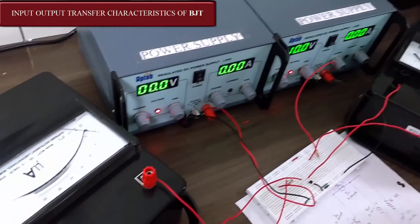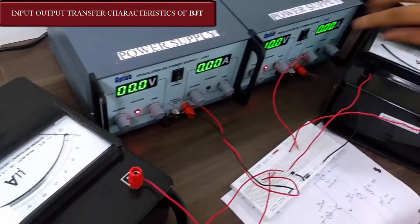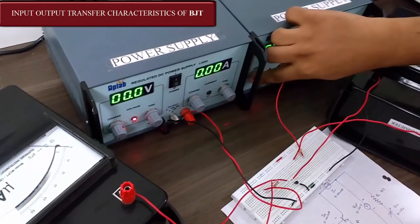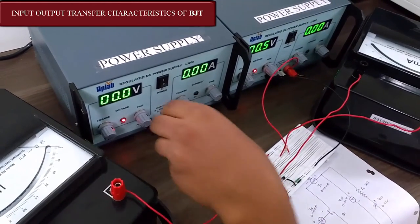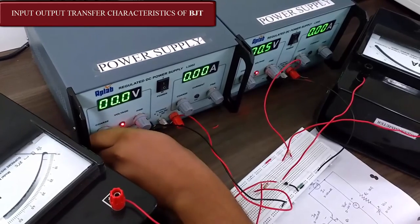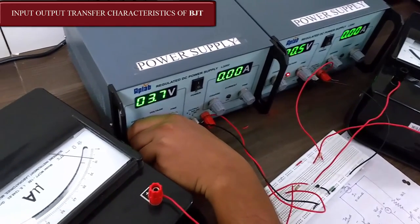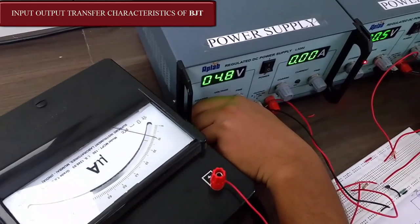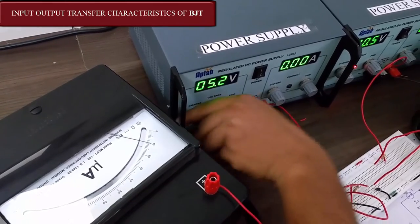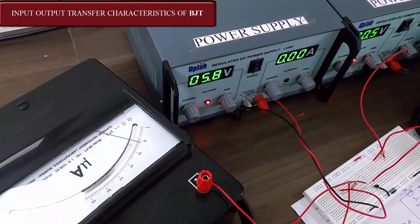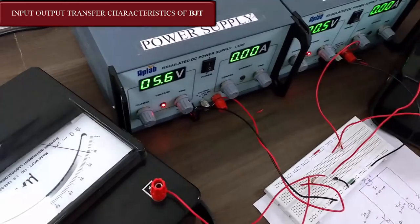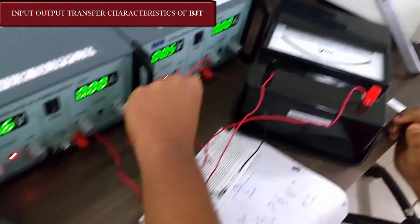Now we are going to discuss the output current. For the output current, firstly we will make VCC zero and we will set VBB such that we are getting 10 microamps. It is set at almost 10 microamps.